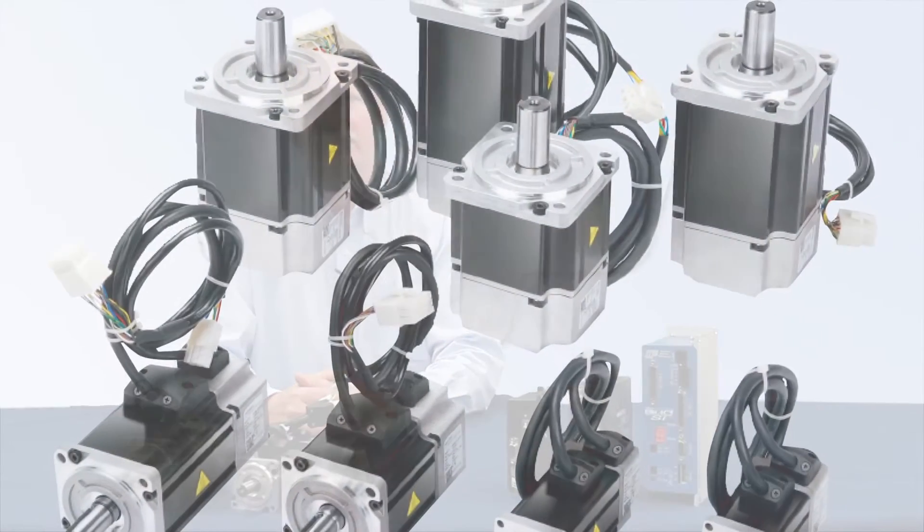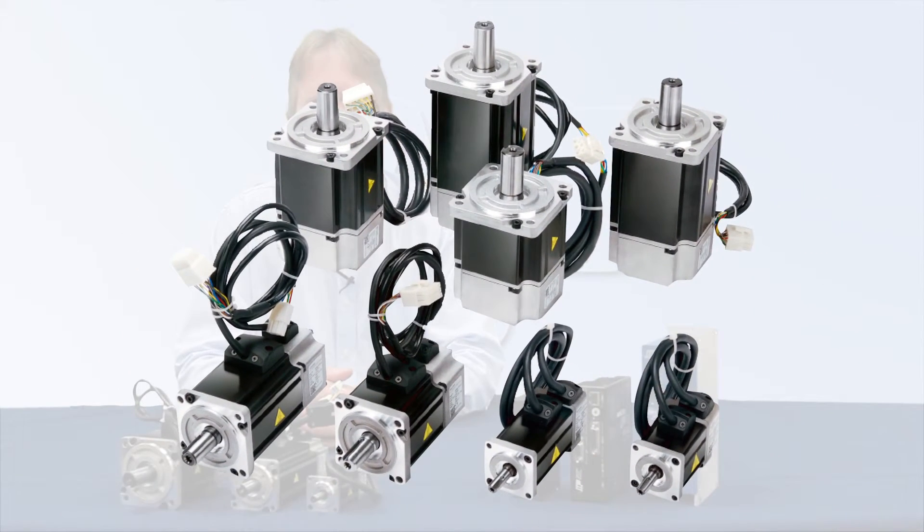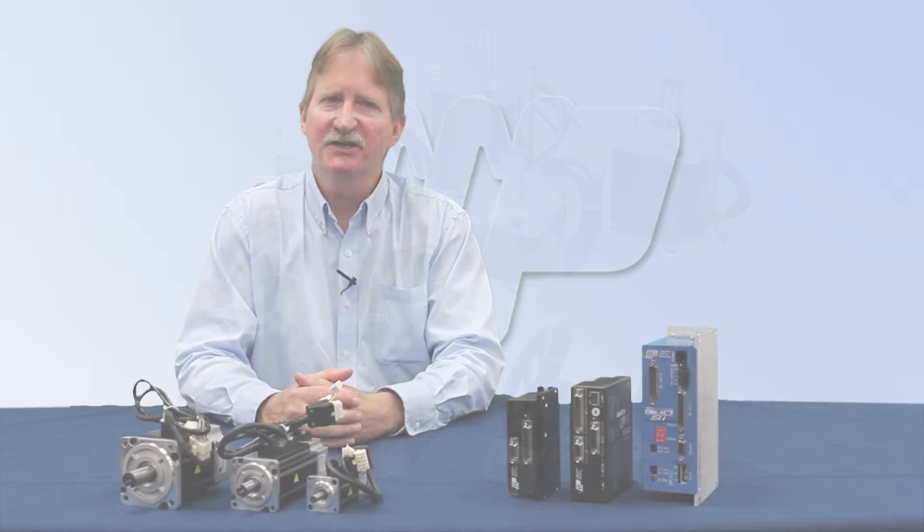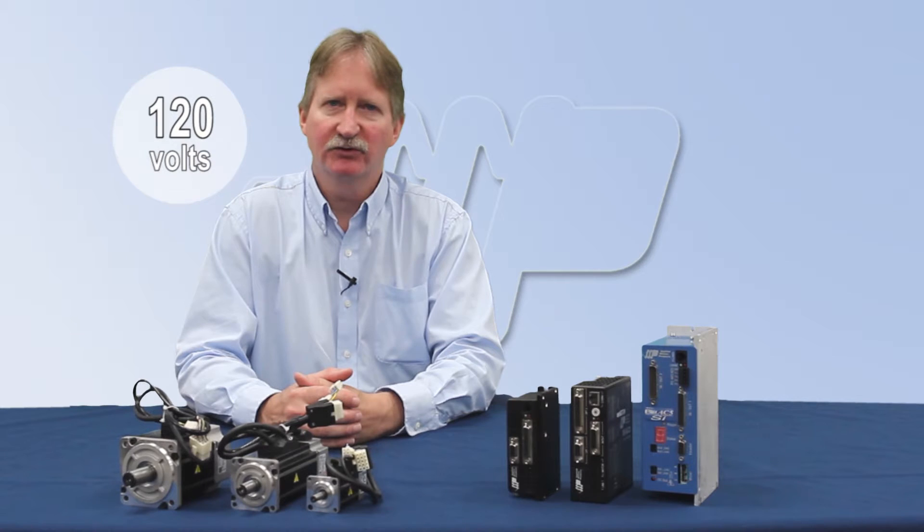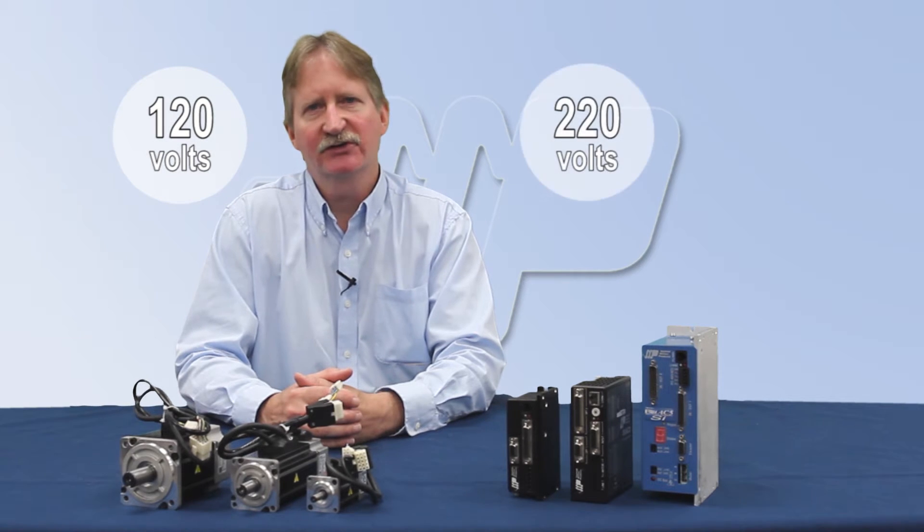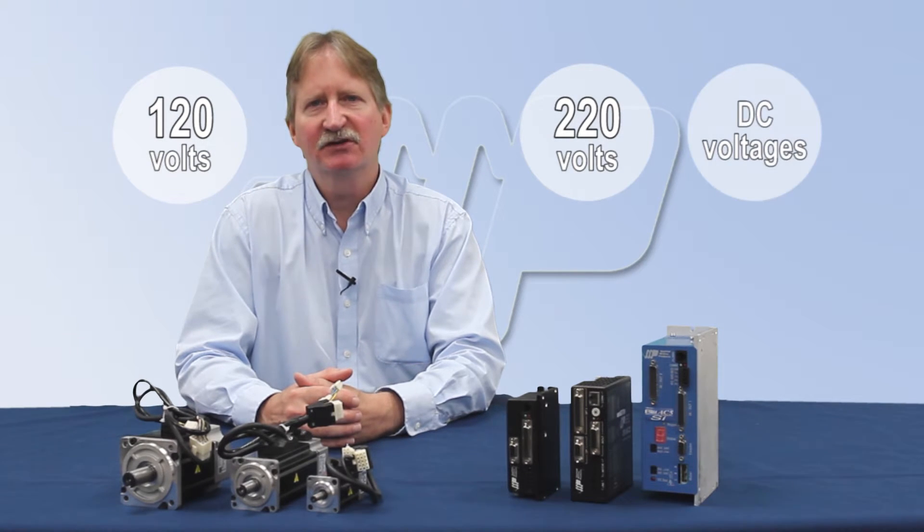Applied Motion Products is excited to announce our new J-Series high-performance, low-cost servo motors. These smooth-running motors pack a lot of power in a compact size. They're available off-the-shelf with windings for 120 volts AC, 220 volts AC, and popular DC voltages.